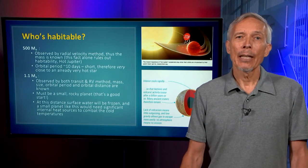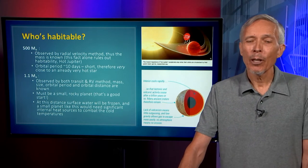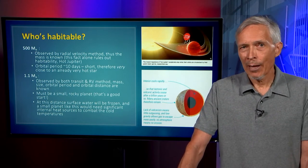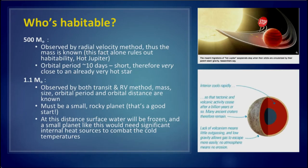More interesting is the very close to Earth-like planet at the outer edge of the habitable zone. Let's imagine it's observed both by the radial velocity method and the transit method. So we have its mass, its size, its orbital period, and its orbital distance. We know that it must be a small, rocky planet.